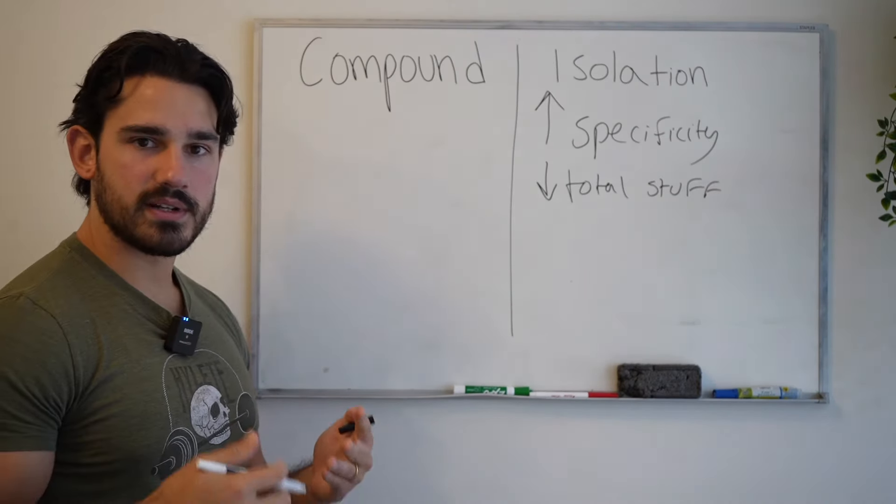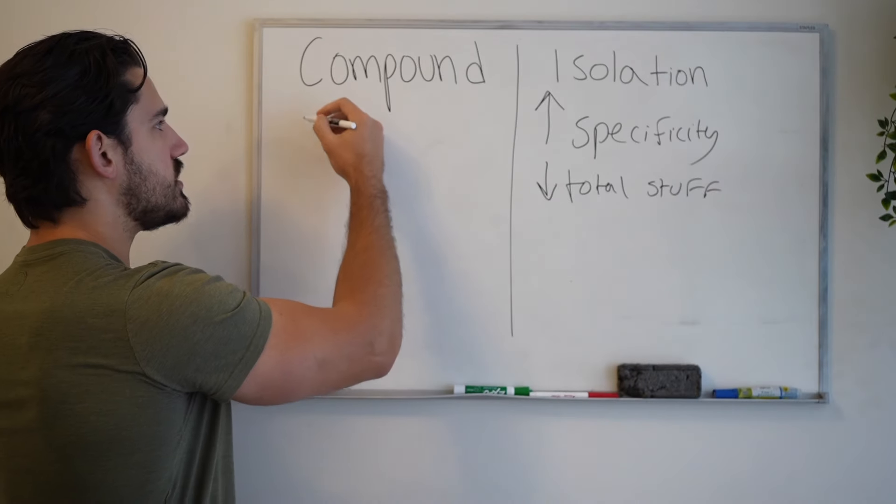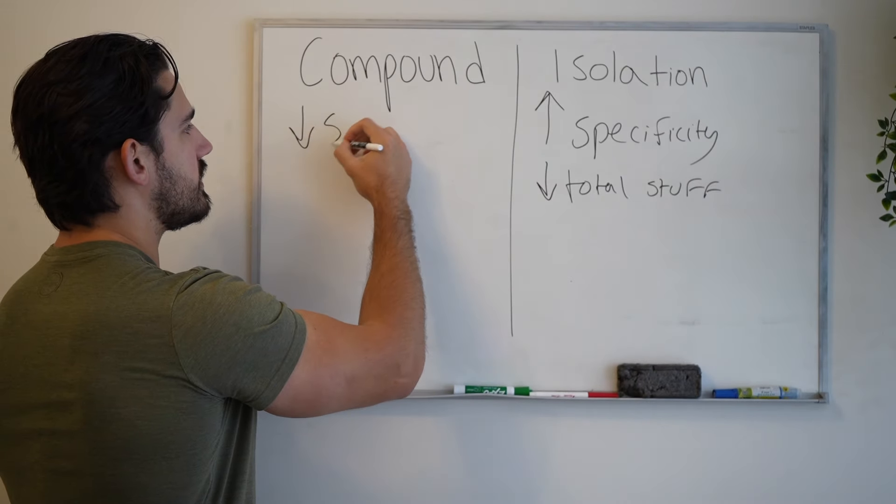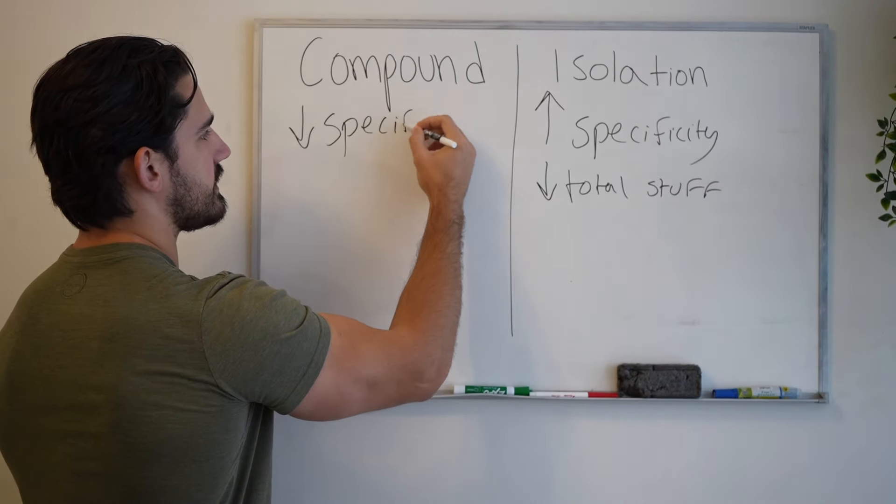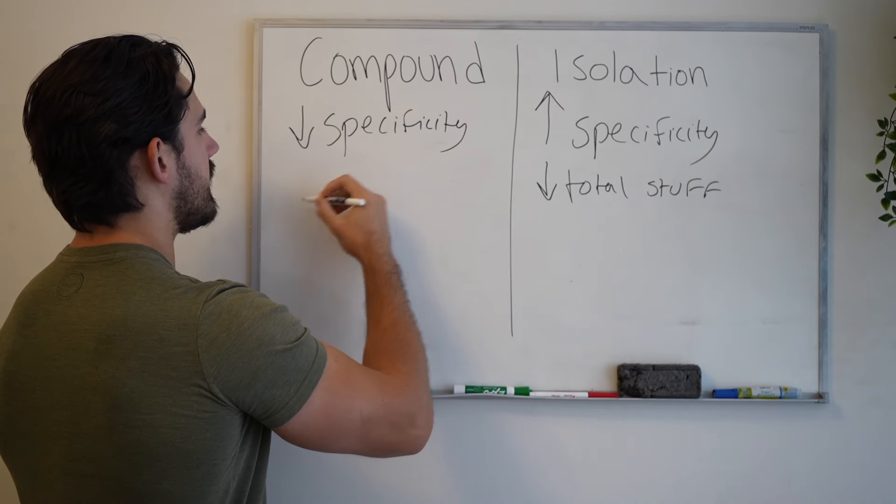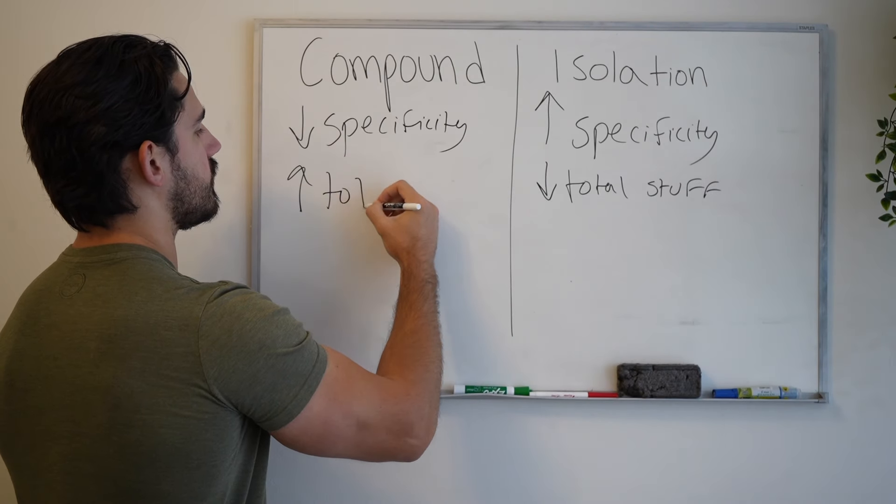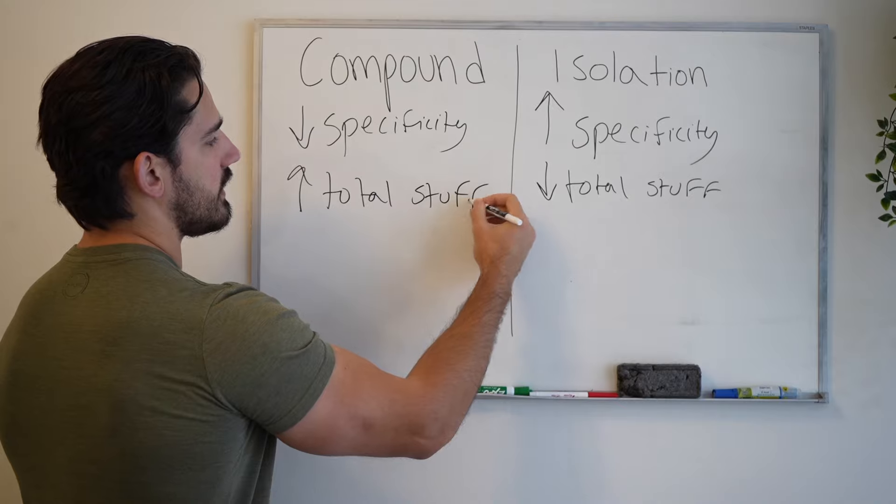And with compound, it's kind of the opposite. Like in general, we have a decreased amount of specificity and we have an increased amount of total stuff recruited.